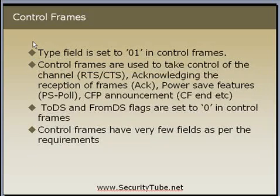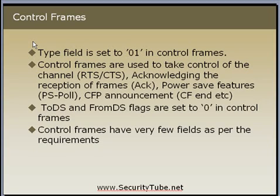Now let's look at control frames. In control frames the type bit is set to 01. Some examples of control frames are RTS, CTS, acknowledgement, and power save. RTS and CTS frames are used to solve the hidden node problem.